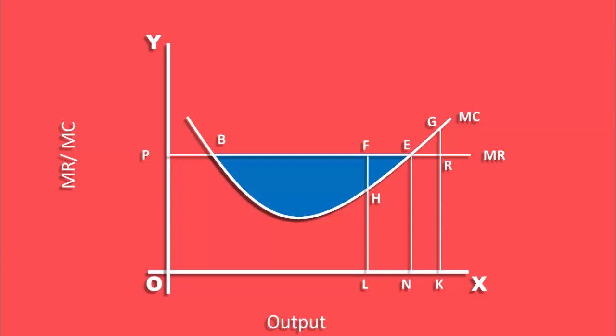His marginal cost is KG, his marginal revenue is KR. The area bound by REG is the loss incurred by the firm. It means when the firm's output exceeds the equilibrium output, the loss eats away a part of its profit.